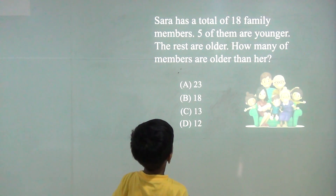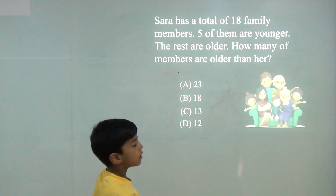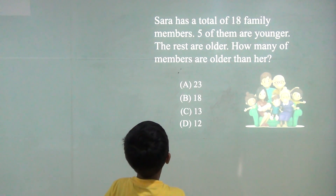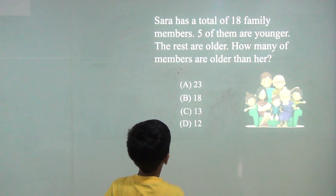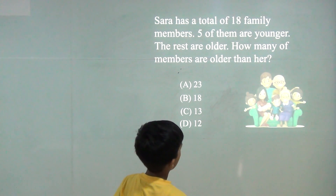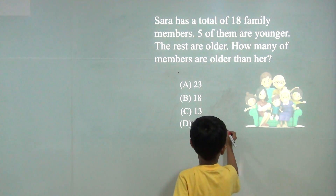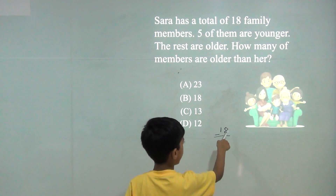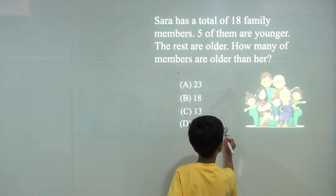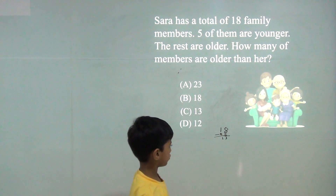Sarah has a total of 18 family members. Five of them are younger and the rest are older. How many members are older than her? So we will do 18 minus 5. 8 minus 5 is 3, 1 minus 0 is 1. So the answer would be 13.